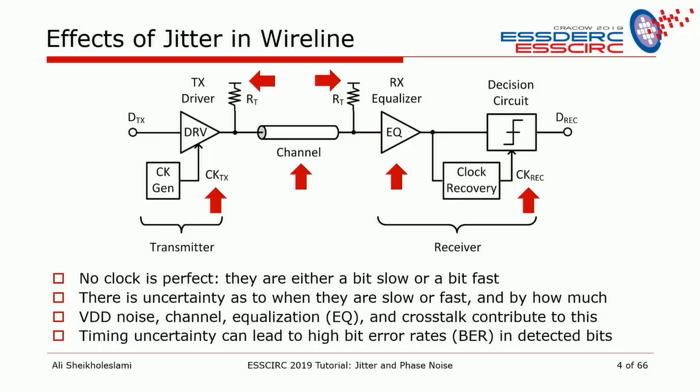In wireline, what we're really interested in is sending data and detecting it perfectly at the end without much error. Our measure of performance is bit error rate — the lower the better. Because of jitter, we start observing more and more bits in error. So we study jitter because jitter is the main contributor to bit error rate in the wireline system.